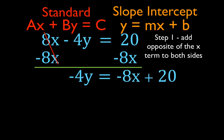I wrote the x-term first, in front of the 20, because as you can see in the slope-intercept form it is y equals mx — the x-term — and then the number without the x or y. Now that is the first step completed.